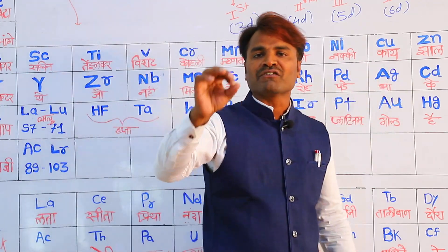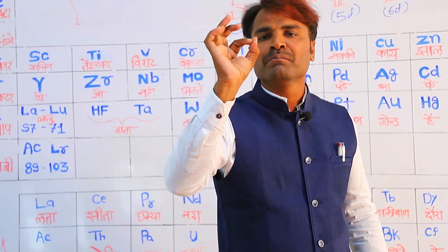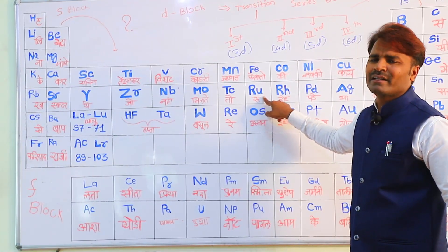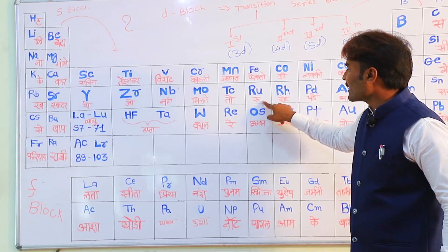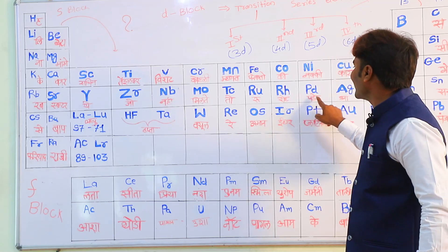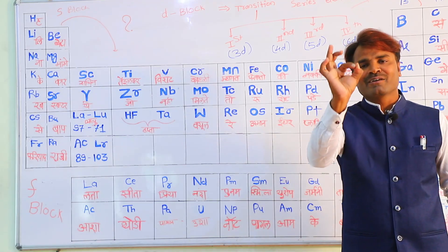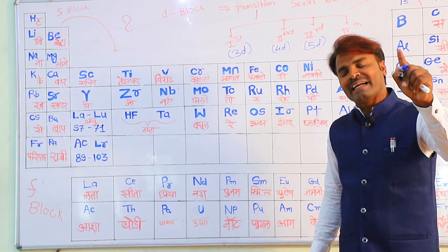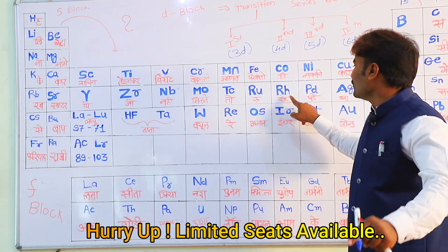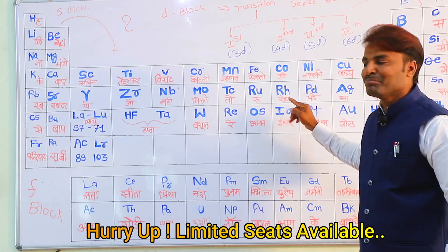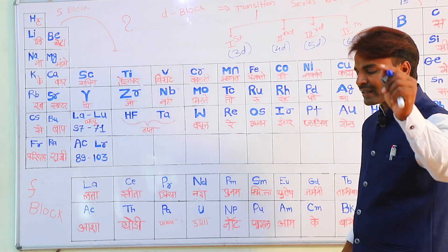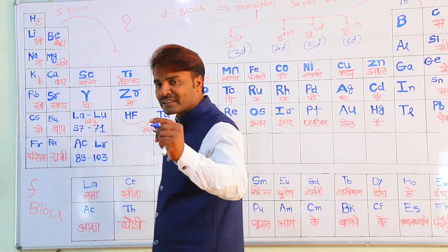That is a trick for the second transition series element. This is a very expensive trick — it makes this better as a transition series mnemonic.